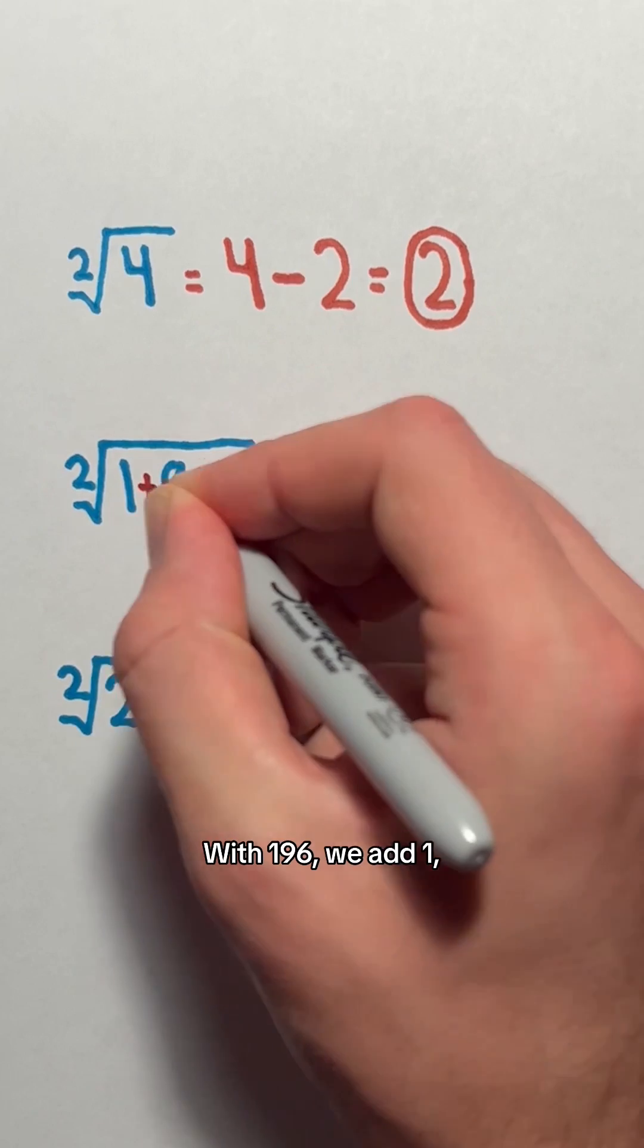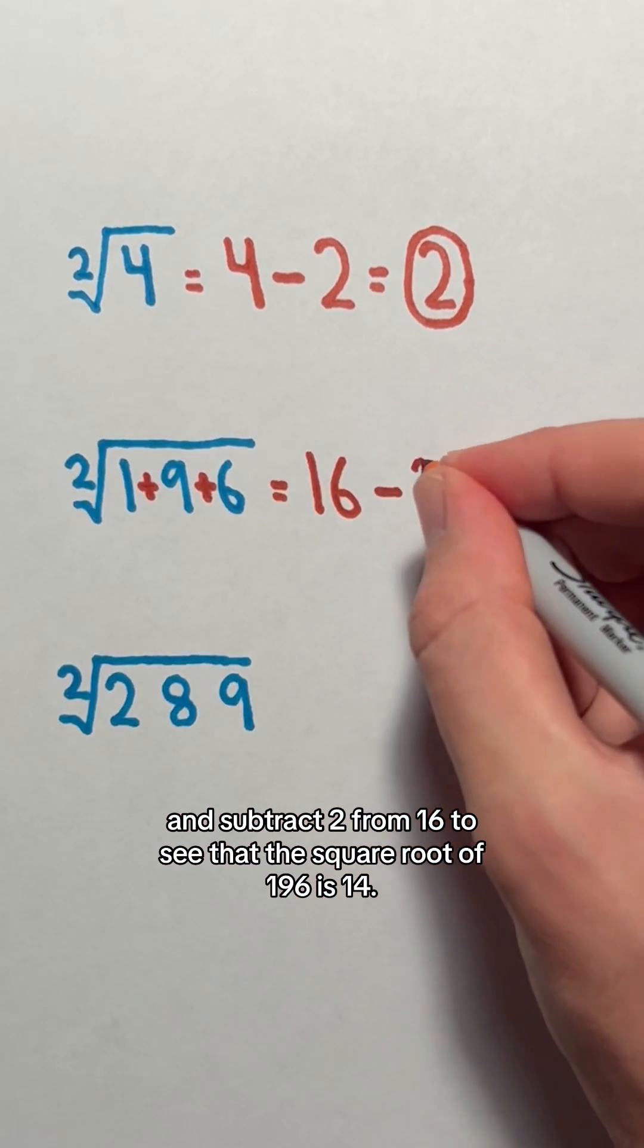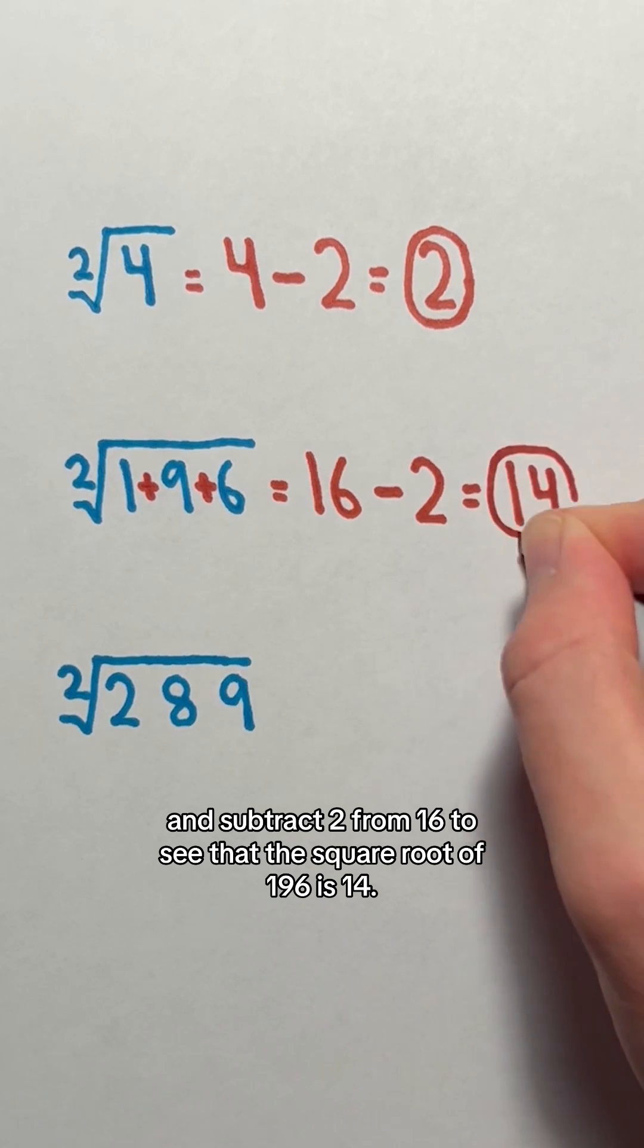With 196, we add 1, 9, and 6 to get 16, and subtract 2 from 16 to see that the square root of 196 is 14.